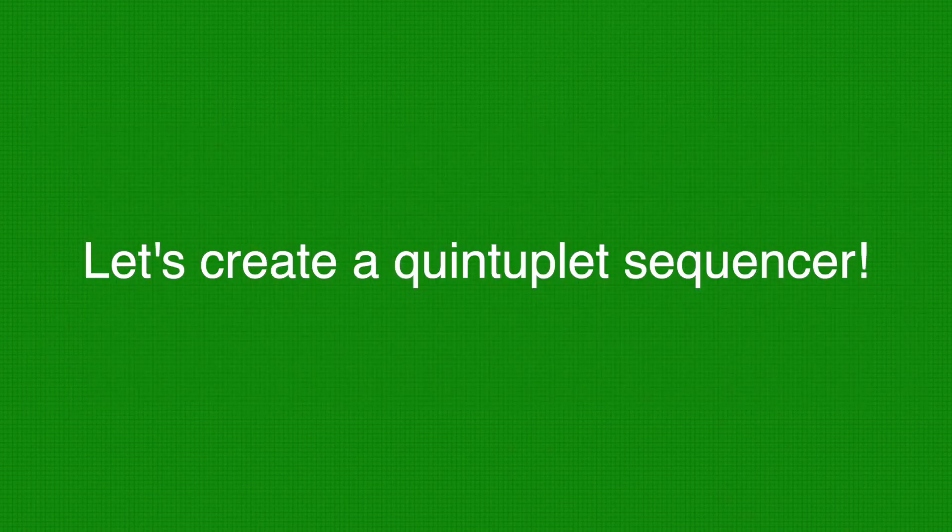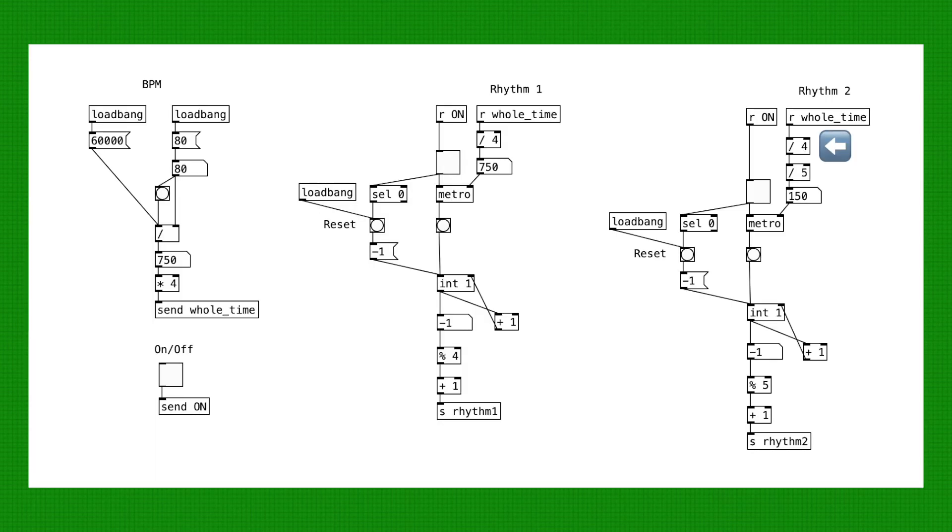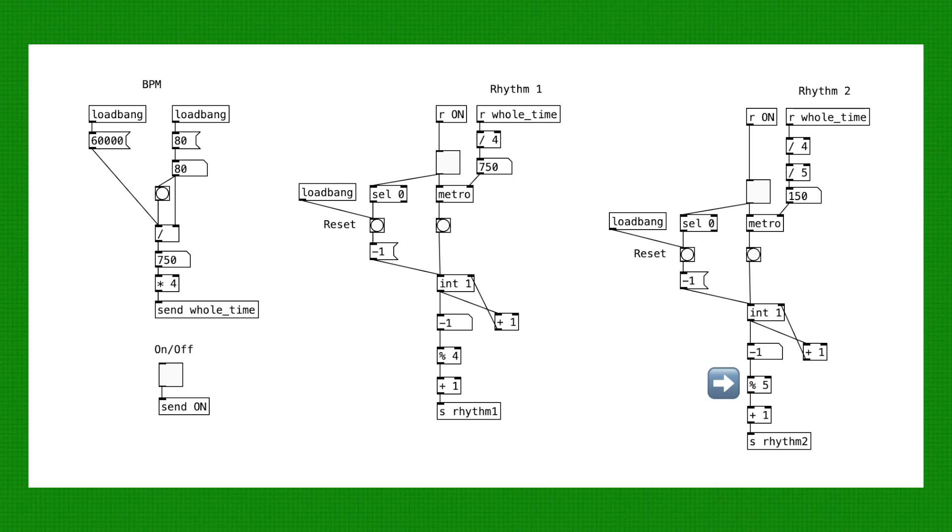We can use this technique to do quintuplets. Let's fit 5 notes within one quarter note. We have the whole note time here and we divide that by 4, giving us the quarter note. And we further divide that by 5, which gives us a quintuplet. We then change this modulo to a 5 so that we have the counter loop from 1 to 5. Let's have a listen.